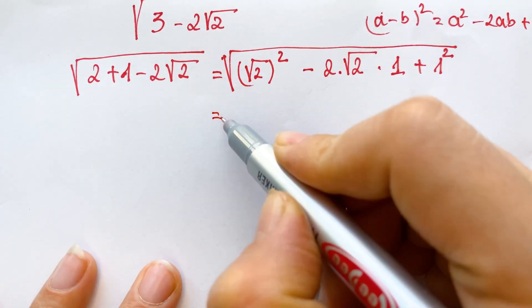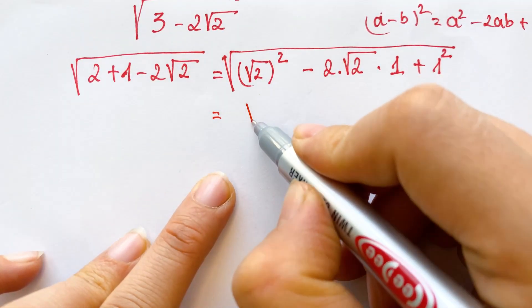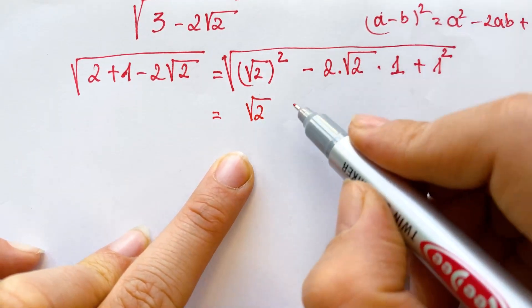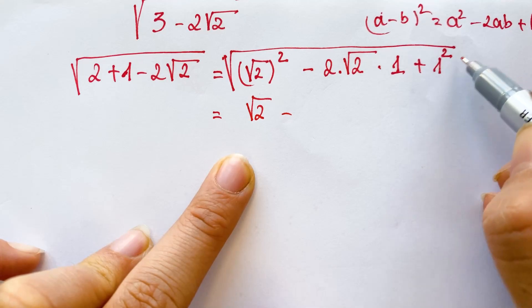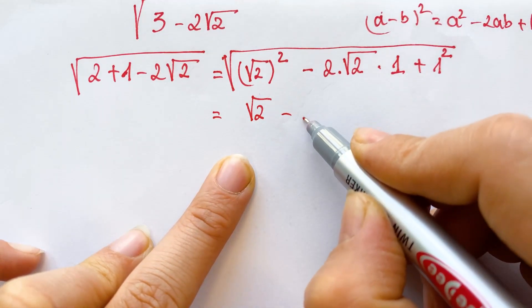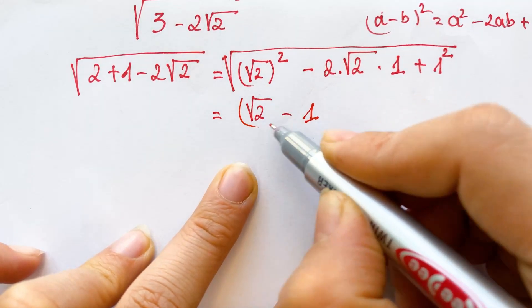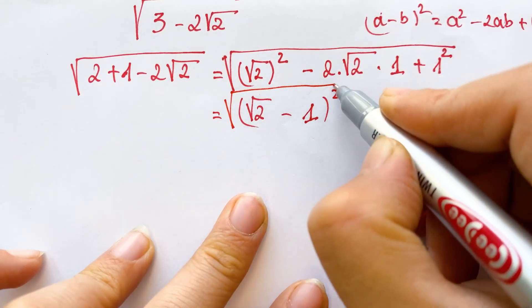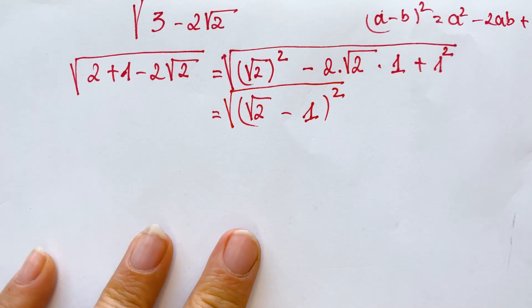Therefore, square root two is a, and b equals one. (√2 - 1) to the power of two gives us the square root.